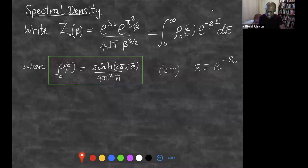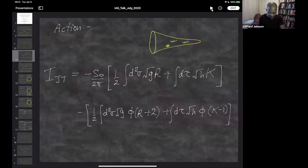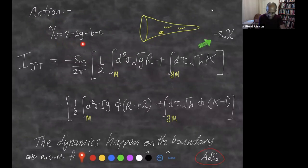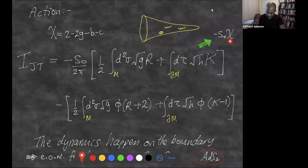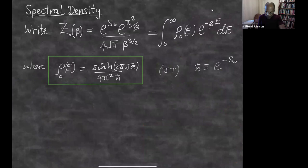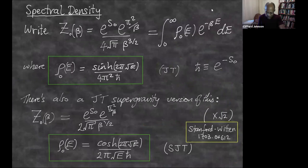The full perturbation theory involves developing this on surfaces of arbitrary topology with that fixed boundary. The topology is counted by this term — the Euler density — and there's the minus S_0 times chi. The leading piece had g=0, c=0, b=1, and that was the factor we saw a few moments ago. So that's the whole story so far.